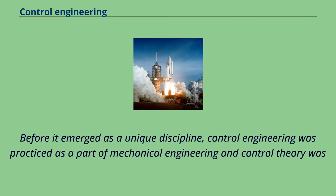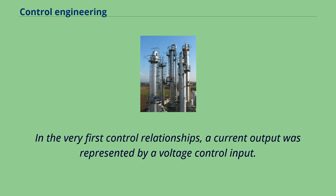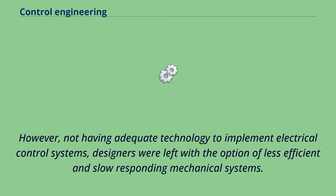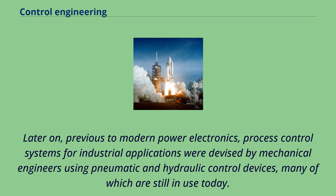Before it emerged as a unique discipline, control engineering was practiced as part of mechanical engineering, and control theory was studied as part of electrical engineering, since electrical circuits can often be easily described using control theory techniques. In the very first control relationships, a current output was represented by a voltage control input. However, not having adequate technology to implement electrical control systems, designers were left with the option of less efficient and slow-responding mechanical systems. A very effective mechanical controller still widely used in some hydro plants is the governor. Later, previous to modern power electronics, process control systems for industrial applications were devised by mechanical engineers using pneumatic and hydraulic control devices, many of which are still in use today.